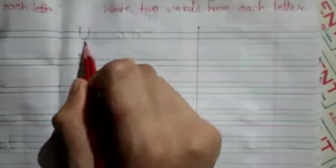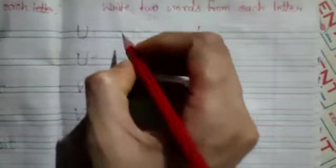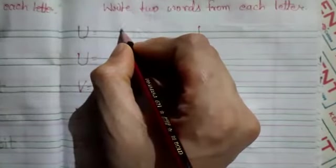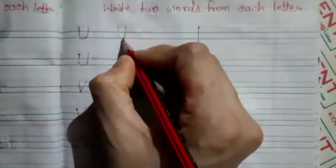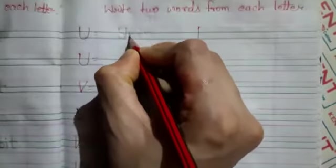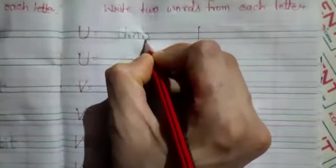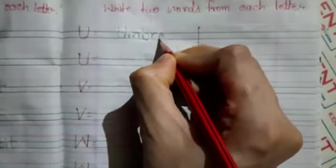Here it is U. Let's see the first word from letter U. The word is U M B R E L L A, umbrella. Umbrella means chata.